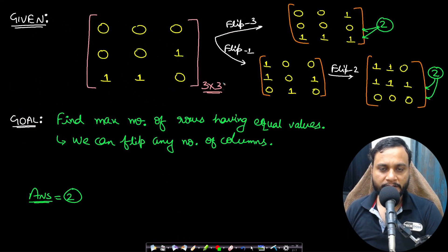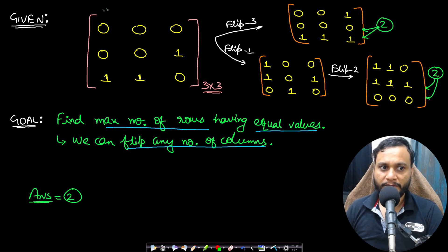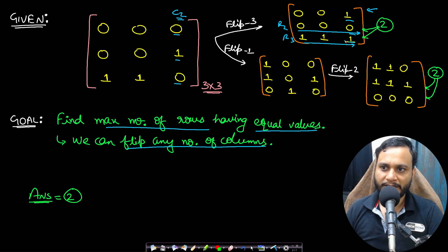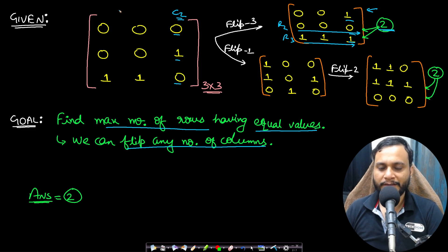Let's look at an example. We are given a 3 by 3 matrix and our goal is to find the maximum number of rows having equal values. We can flip any number of columns. If we flip column number 2, the row 010 becomes 101. In this case row number 2 and row number 3 are both equal rows — equal rows means all values in that row are the same, we are not comparing one row with another.